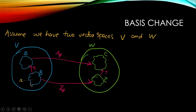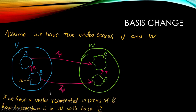Assume we have a vector x represented in basis B̂, and we want to convert it into the Ĉ basis — that is, into vector space W with basis Ĉ. How do we do that transformation?